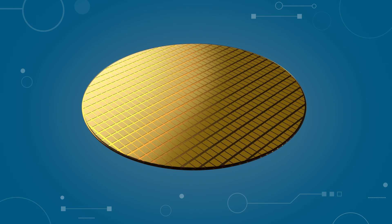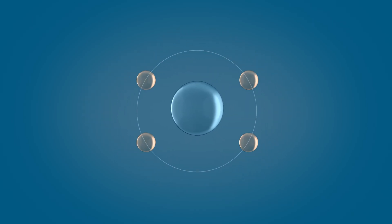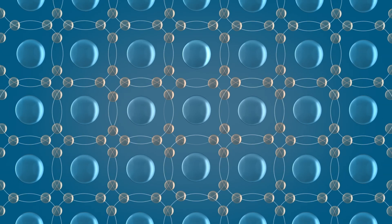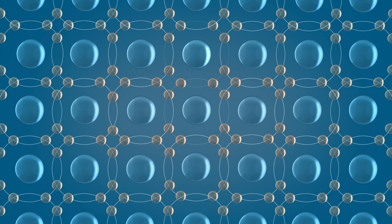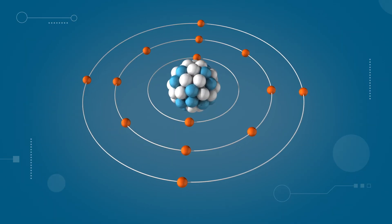Semiconductors are primarily made of silicon. Silicon has four outermost electrons, which it shares with other silicon atoms to form a strong bond. Atoms achieve their most stable structure when they have eight outermost electrons. When tightly bonded like this, electrons cannot move freely, preventing current from flowing. Pure silicon, therefore, does not easily conduct electricity.